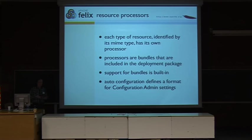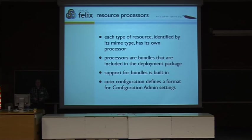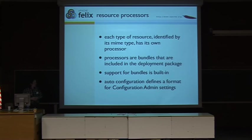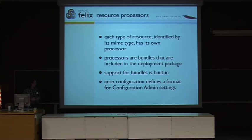Apart from bundles, you can basically add your own types of resources to these deployment packages, where every type of resource is identified by its MIME type, and every type of resource can have its own resource processor. A resource processor is mainly just another OSGI bundle that gets shipped alongside these resources, and it actually allows you to define some way of installing these resources on the target system. So if you want to add some Debian packages, images, or HTML pages that you want to deploy on your target system, you can simply add a resource processor that knows how to deal with them. One of these resource processors is actually standardized in the form of configuration admin, which is a mechanism in OSGI to configure all kinds of different aspects of the framework and services.